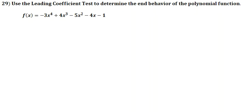The first step with a polynomial function when determining the leading coefficient is to make sure that your function is arranged from left to right, with the highest exponent on the far left-hand side down to the least greatest exponent.